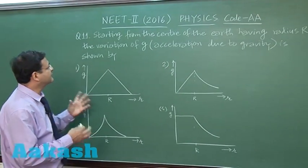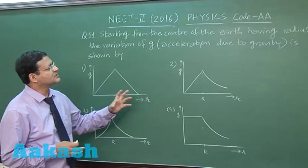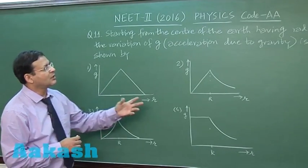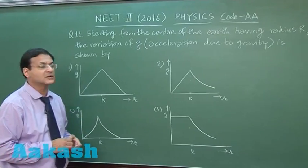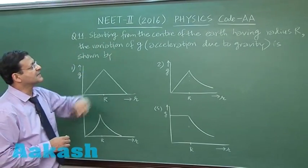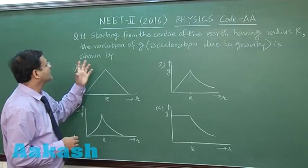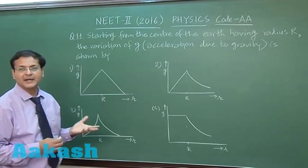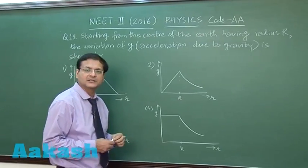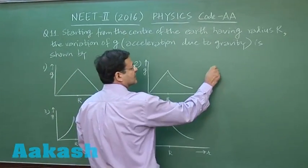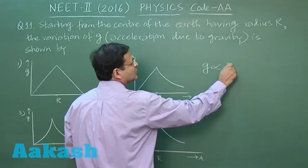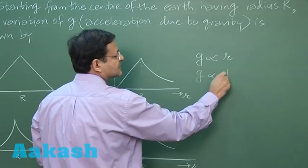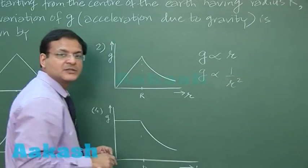This is a straightforward question based on the chapter of gravitation — a graphical representation of acceleration due to gravity due to the earth. Starting from the center of the earth having radius r, the variation of acceleration due to gravity is shown. Inside the earth, the acceleration due to gravity is proportional to small r, and outside the surface of the earth it is proportional to 1/r².